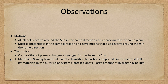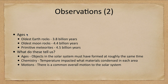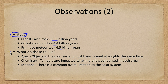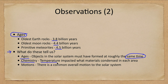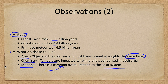We can also look at ages — how old are things in the solar system? Earth rocks go back 3.8 billion years, moon rocks about 4.4 billion years, and very primitive meteorites about 4.5 billion years. This tells us that things formed at approximately the same time; we didn't have things forming billions of years apart. The chemistry tells us that temperature was important and impacted what materials were able to condense, while the motions tell us there is a common overall motion to the solar system.